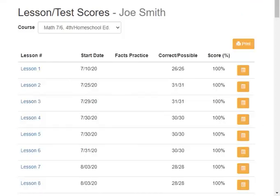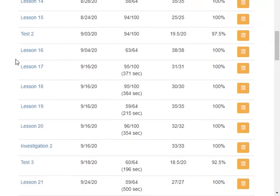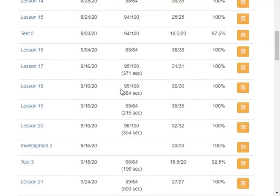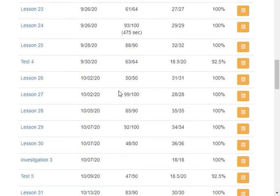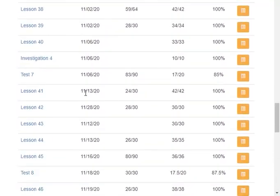There's a Scores tab where they can actually see the progress that they've made through their course, the scores they've gotten on all the lessons and tests, the scores they've received on the facts practice. If you have the timer turned on, it'll tell you how long it took them on the facts practice, as well as what date they started each lesson, so you can kind of keep a timeline of how they're progressing.